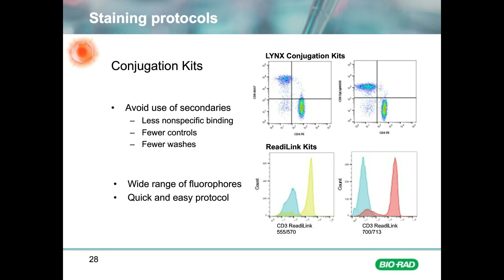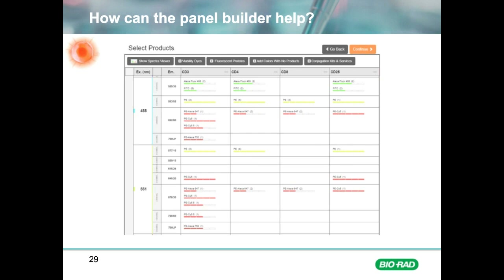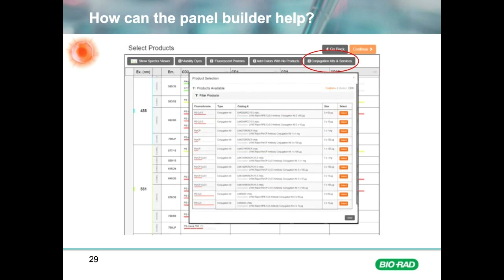We have two easy-to-use conjugation kits that are quick and require minimum hands-on time. We have Links kits that allow conjugation of up to milligram amounts of antibody to traditional fluorophores, enzymes, and biotin. We also have ReadyLink kits with fluorophores specifically developed for use in flow cytometry, suitable for smaller quantities of antibody. The panel builder can help you choose the right conjugation kit — all conjugation kits and custom antibody conjugation options can be located by clicking on the relevant tab, allowing you to select a free channel and available conjugation options.